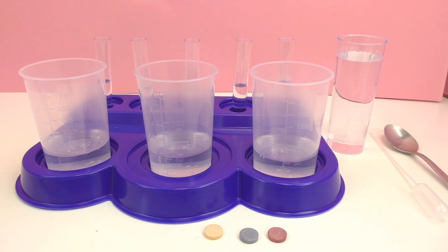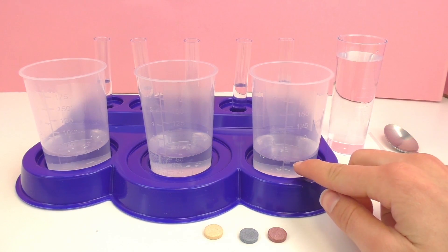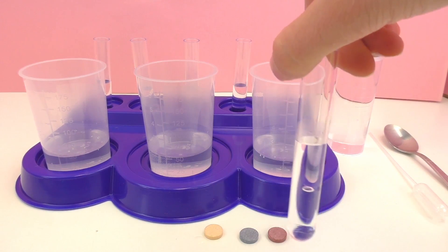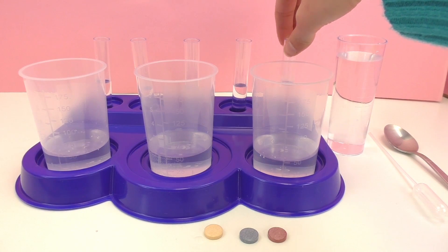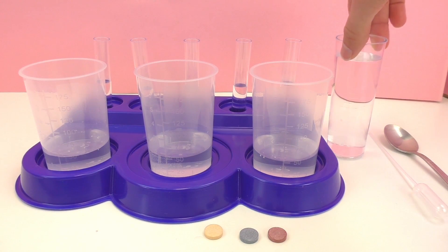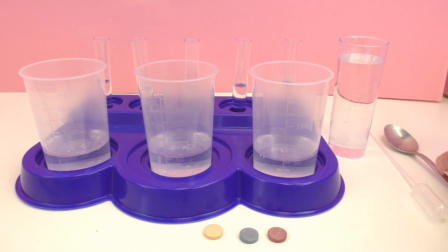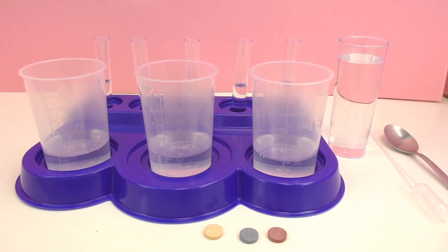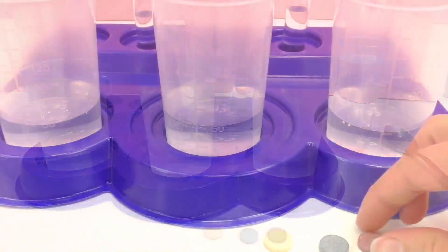So first off I filled up the three cups with 50 milliliters of water, and then I filled up the test tubes with about half full of water. And then finally I have another container for water and this is going to be used for cleaning out the eyedropper. I have an eyedropper, a spoon, and three color pellets.